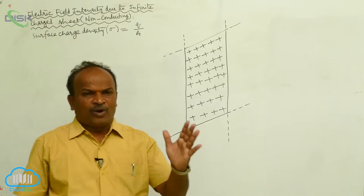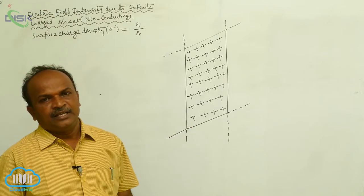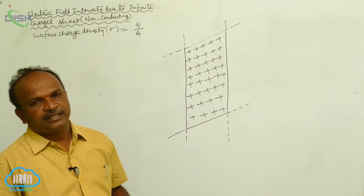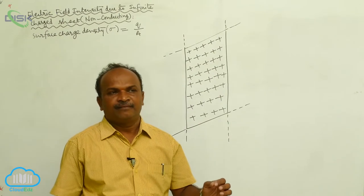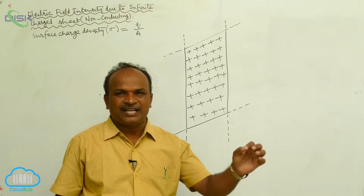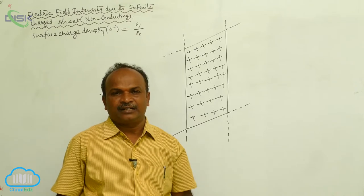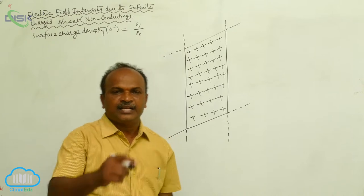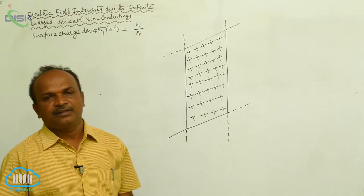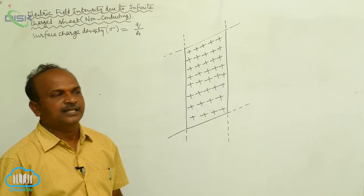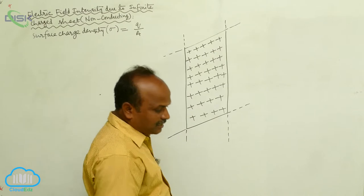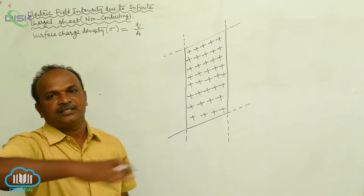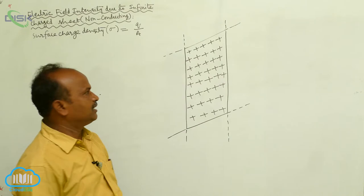What is the Gaussian surface? As discussed earlier in the case of a linear charged conductor, the Gaussian surface is a cylinder. In this case also, the Gaussian surface is a cylinder — but unlike the previous case where the cylinder was vertical, here the cylinder is taken as horizontal.